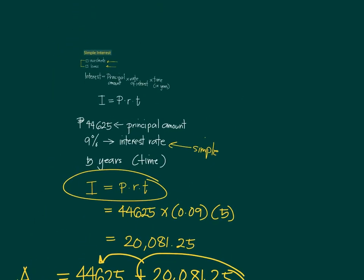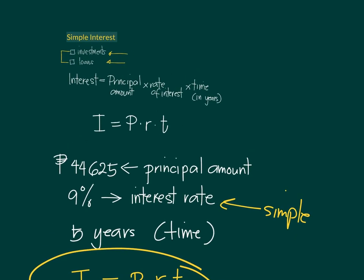In another video, I will explain compound interest and how it differs from simple interest. To summarize: with simple interest, you invest money and after a period of time your money grows by computing the interest and adding it to the principal. For loans, you borrow from the bank and in return you pay interest after some time. I hope you now understand how to work with simple interest.